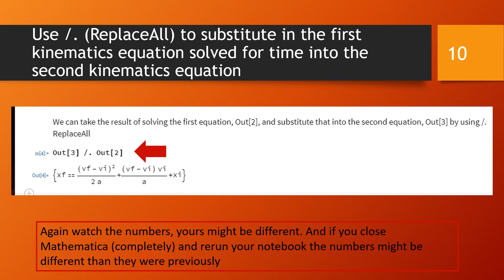And we can do that by using this slash dot notation which means replace all. So replace all the t's, all the times in the second kinematic equation Out[3], and substitute in what you found for time by solving equation one, and the solution to equation one is known as Out[2]. So we type Out[3] /. Out[2]. That means take the second kinematic equation and everywhere you find a time in that equation substitute in the expression you found in Out[2].